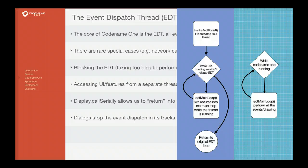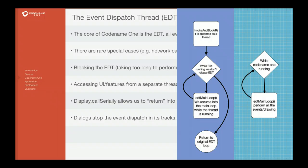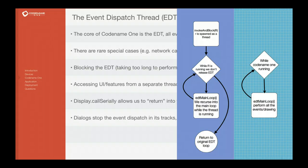Invoke and block works by accepting a runnable, for which it spawns a thread, and technically the runnable is executed on a separate thread. Then we have a loop — and you'll notice the loop on the left and the loop on the right are practically identical — the difference is that the loop on the left is a recursion of the loop on the right. So invoke and block really reruns the event dispatch thread inside itself, and when finished it returns back to the original EDT. There is some performance overhead related to this, but we think the ease of use and programming is definitely worth it.